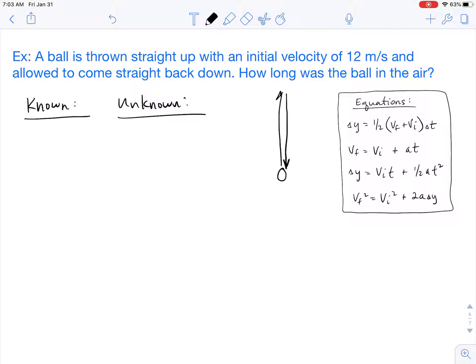So we see that the ball is thrown straight up with an initial velocity of 12 meters per second. So that's going to be our VI. It's allowed to come straight back down. We want to know how long was the ball in the air. So obviously our unknown here is how long did it take. We also know that our acceleration in this problem is going to be that due to gravity, so negative 9.8 meters per second squared.